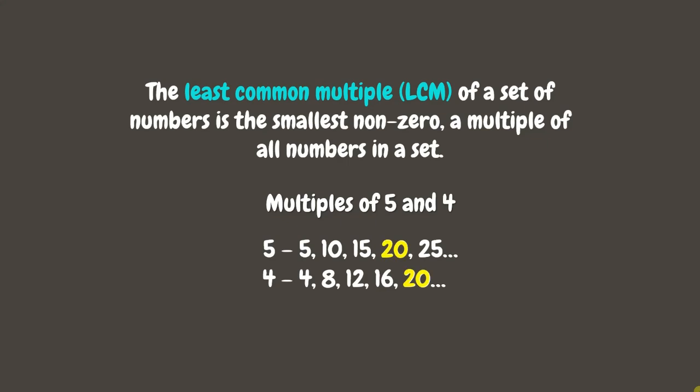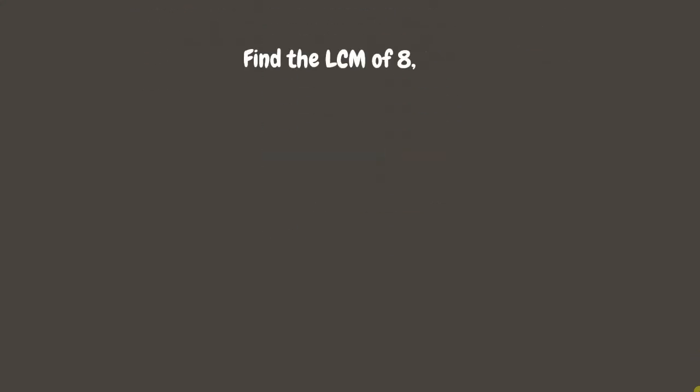Now, another way to find the Least Common Multiple is by using the Continuous Division method. Let's go and use this method. Let's find the LCM of 8, 16, and 24 using the Continuous Division method.